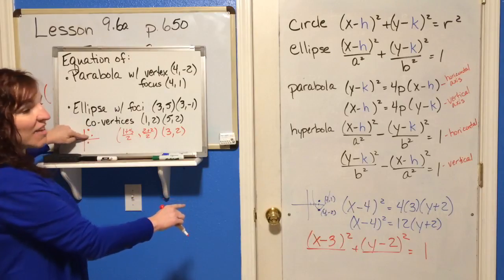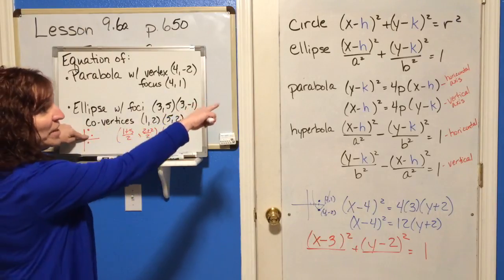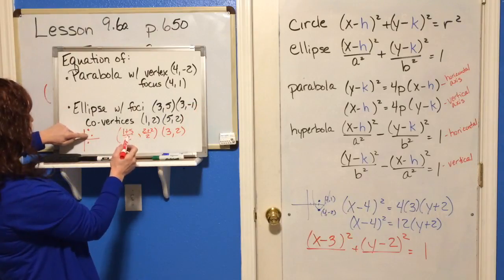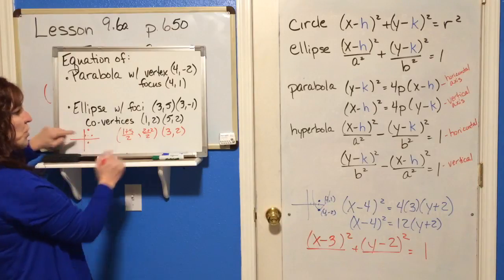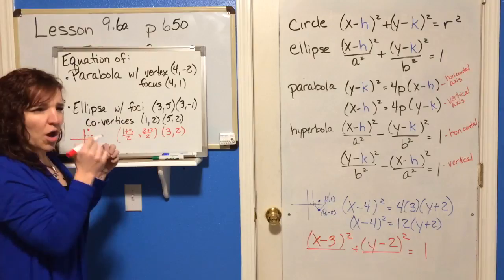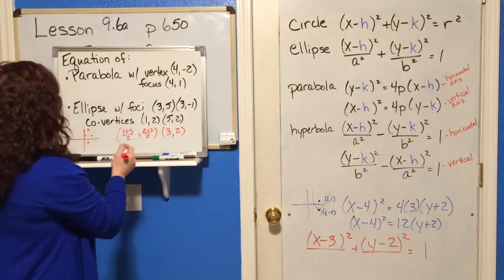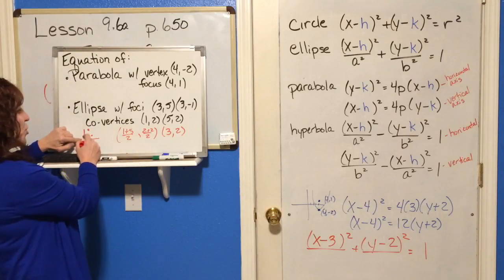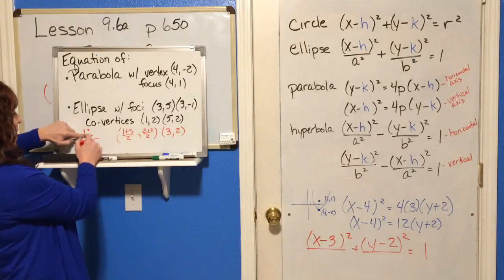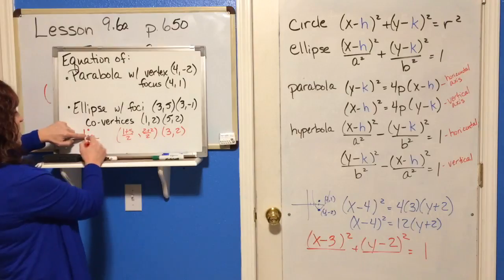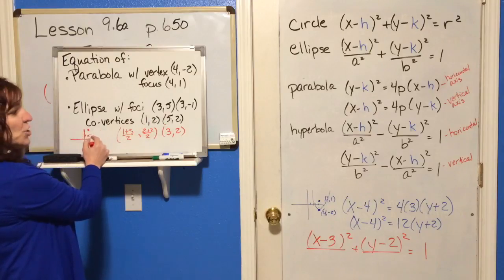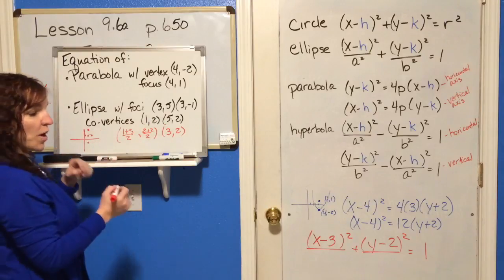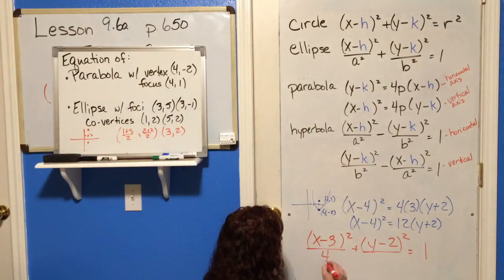How far from center 3, 2 are the co-vertices? From 3 to 5 is 2 units, so the distance is 2. That gives us B squared equals 4 — you can write 2 squared or just 4. Now we need the distance from center to the foci to use the relationship C squared equals A squared minus B squared.